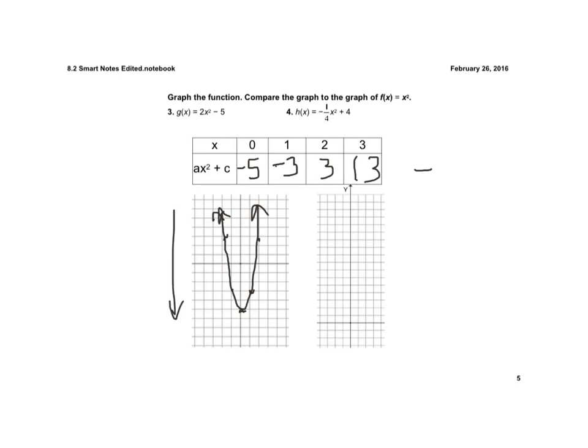Now if we do this next one, I plug 0 in. 0 squared is 0, 0 times negative 1/4 is 0, and 0 plus 4 is 4.